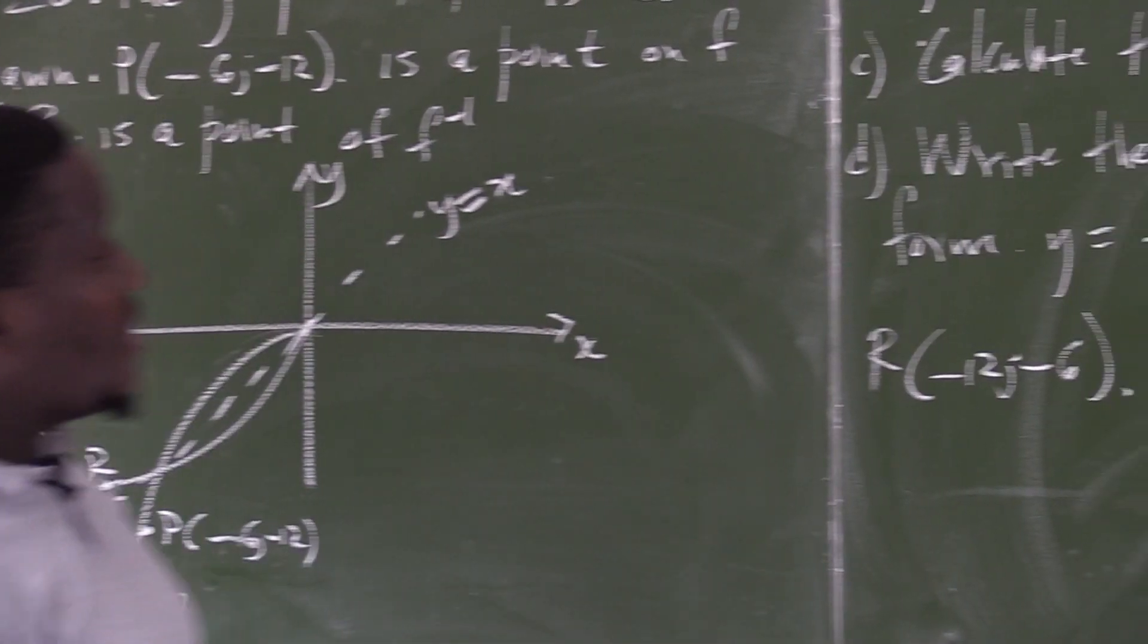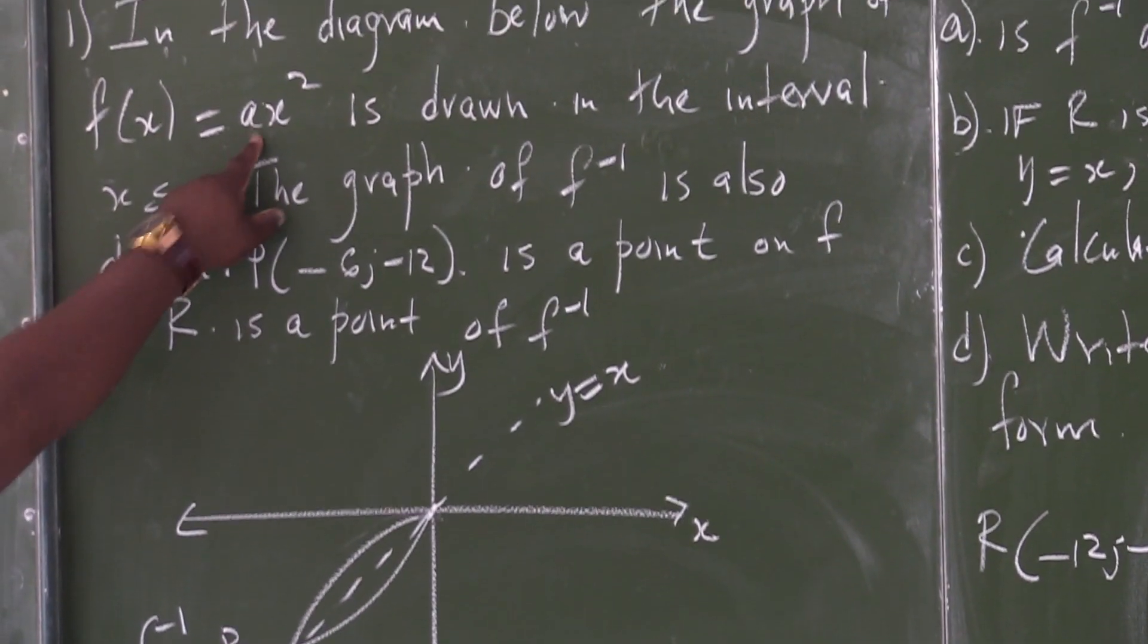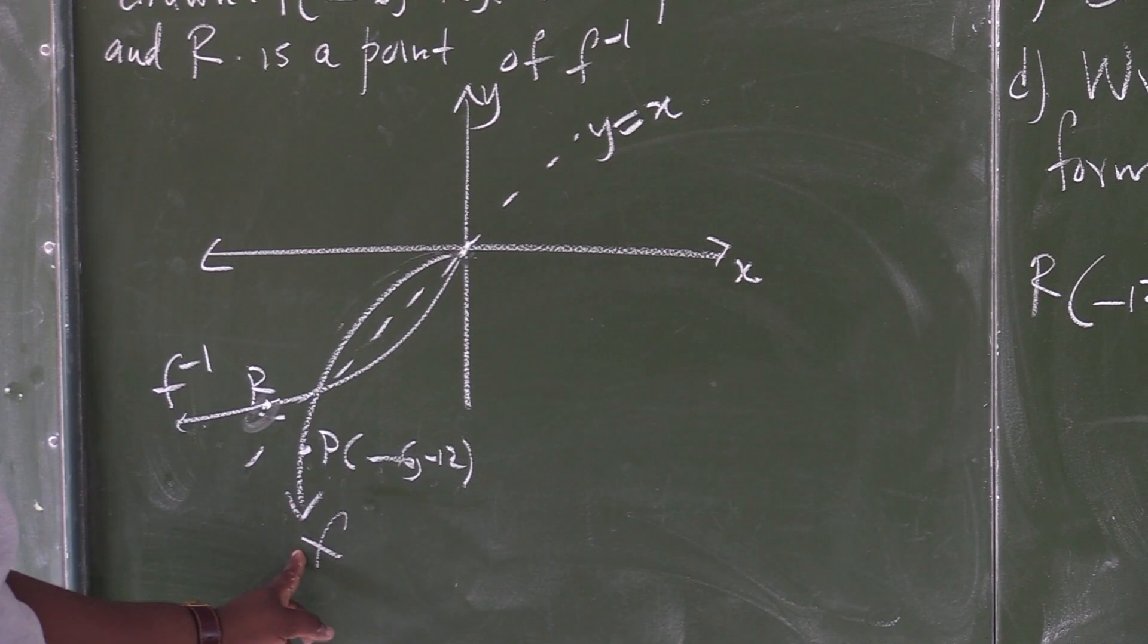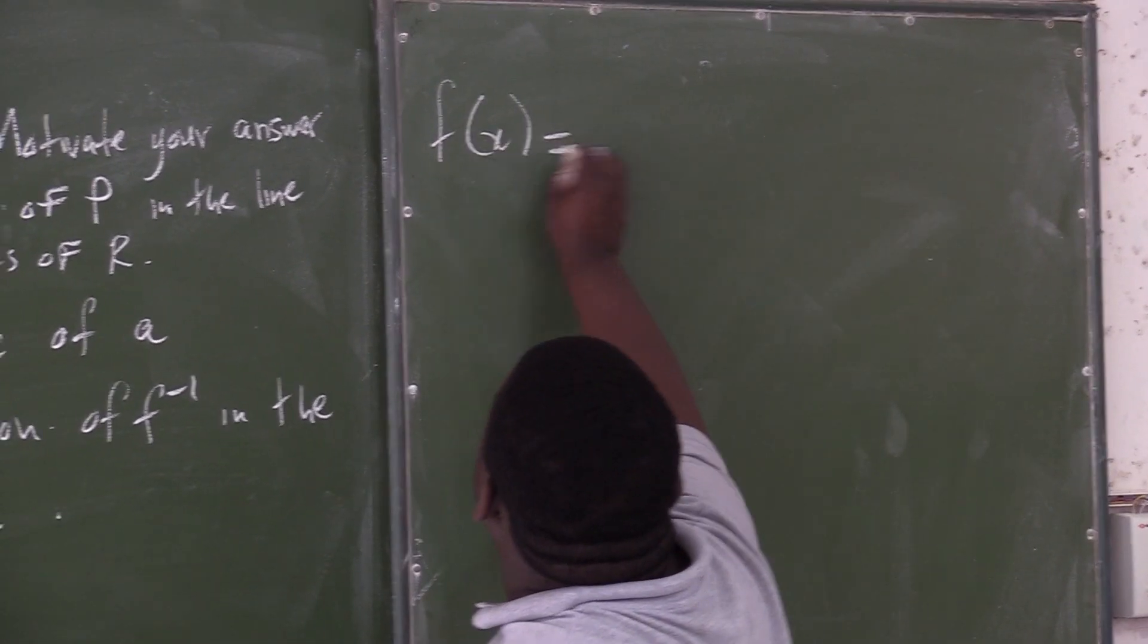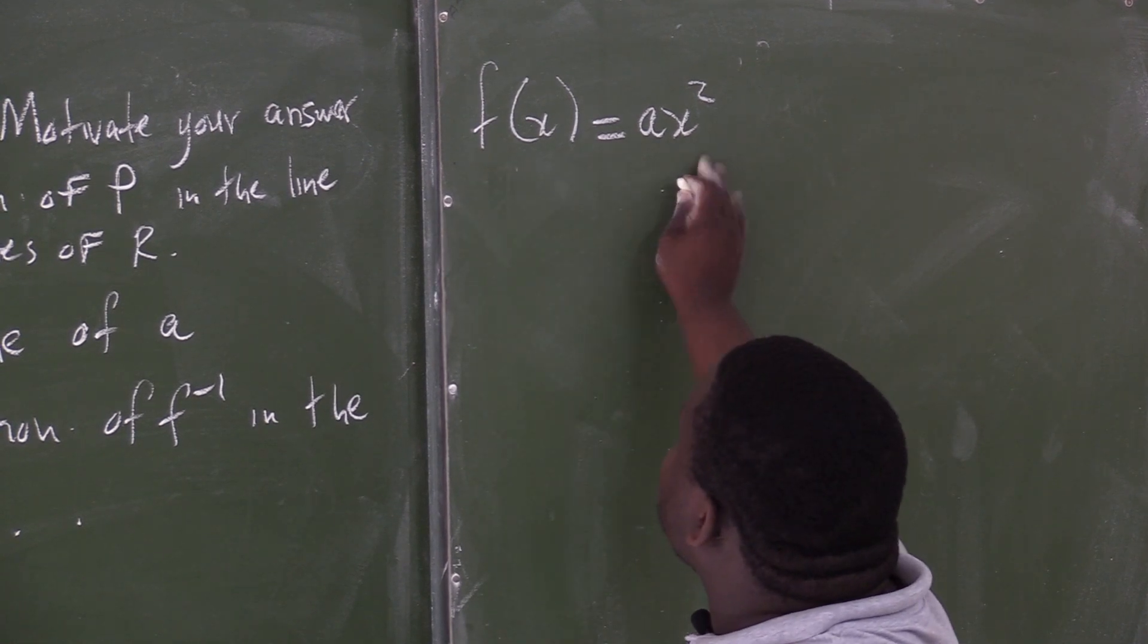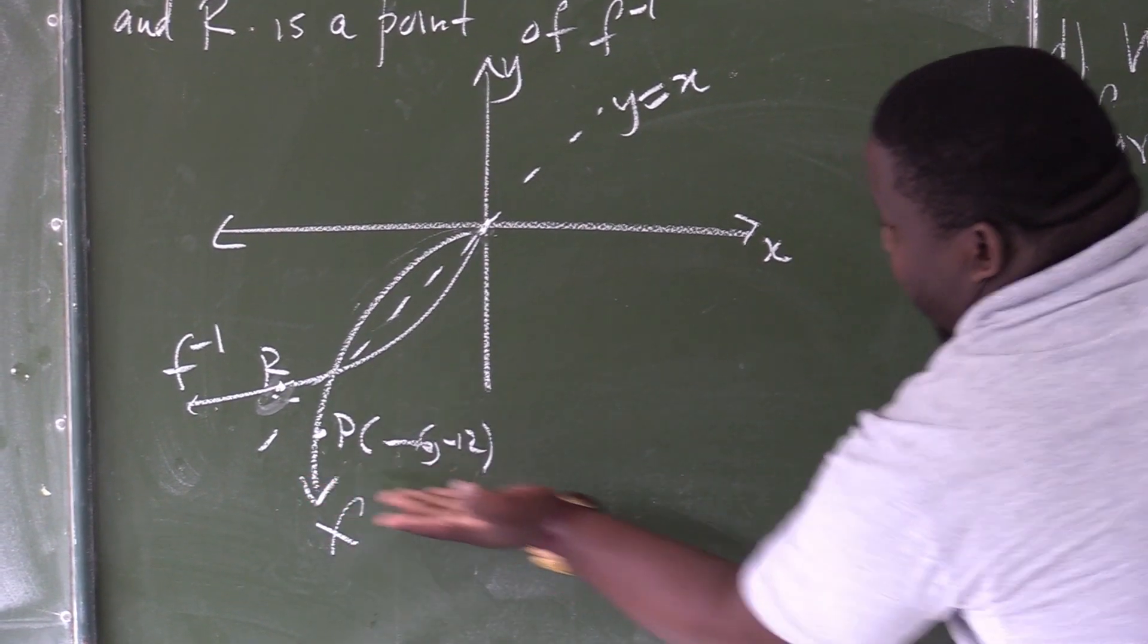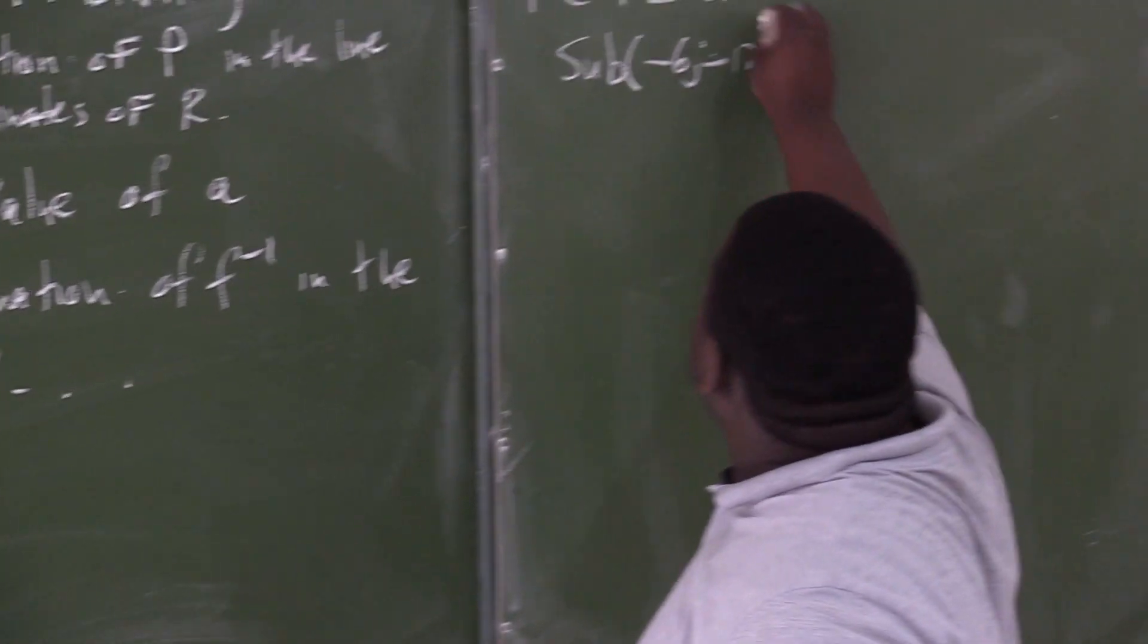Part c: calculate the value of a. This is the a that they are looking for. Where is a in the graph of f? Which graph is the graph of f? This is the graph of f. I know the point that lies on the graph of f. It means we go to the equation that was given to us. We were given f of x, which is ax squared. What are we going to do here? We are going to substitute a point. Which point are we going to substitute? It must be a point that lies on this graph. It means the important point in favor is the one that says negative 6 and negative 12.